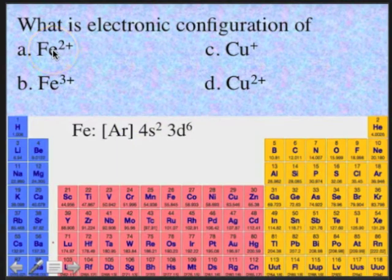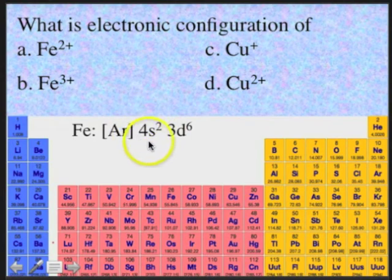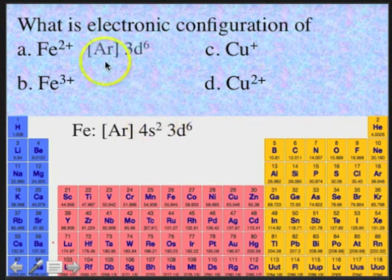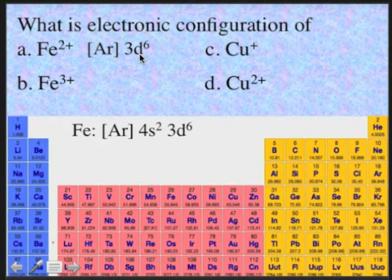For the 2+ ion, it has to lose two electrons. It's going to lose the 4s2, so you're going to end with argon core, 3d6.